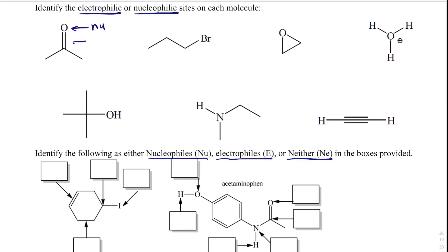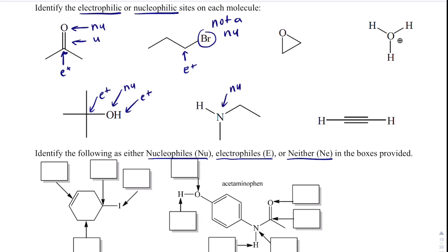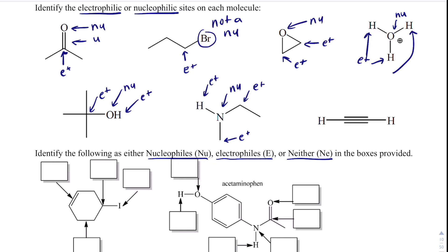Delta-negative means nucleophile. A double bond is a nucleophile. Anything bonded to oxygen is always going to be an electrophile. Bromine is not a nucleophile. Even though oxygen has a positive charge in some cases, that characteristic of electronegativity is still intact — so those hydrogens bonded to it are electrophiles. In the last substance, we only have nucleophiles and no electrophiles.